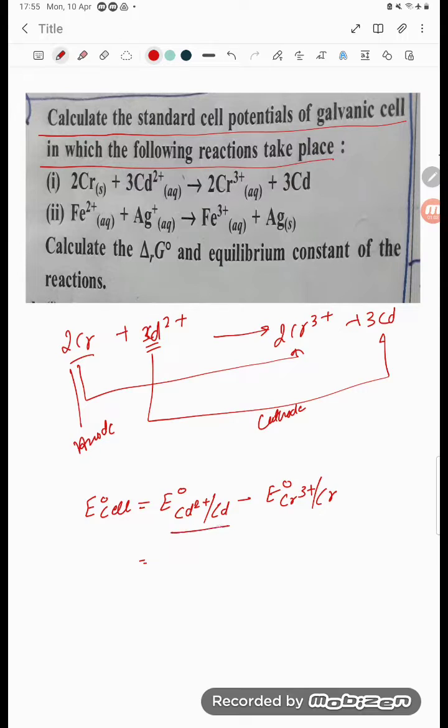What is the Cd value? The value of Cd, if you talk, is -0.40. This is the cathode. And what is the anode value? Student, chromium, it is -0.74.